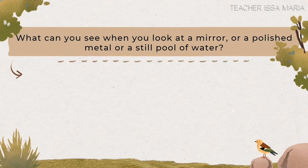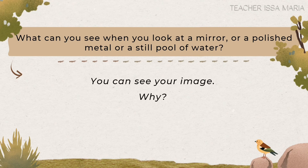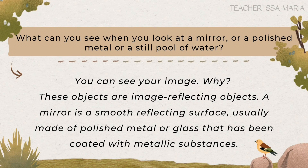Class, what can you see when you look at a mirror, or a polished metal, or a still pool of water? You can see your image. The reason why we can see our image is that these objects are image-reflecting objects. A mirror is a smooth, reflecting surface, usually made of polished metal or glass that has been coated with metallic substances.